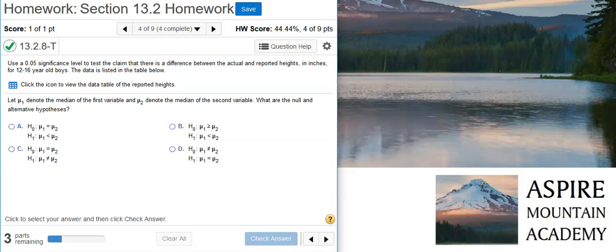Let μ₁ denote the median of the first variable and μ₂ denote the median of the second variable. Okay, so here we've got the first part of our problem and we're asked to find the null and alternative hypotheses. The null hypothesis will always be a statement of equality, and the alternative hypothesis typically reflects the claim. Here our claim is that there's a difference between actual and reported heights, so that means we're going to have not equal to as our inequality sign. That combination of equal and not equal to is found here. Good job.